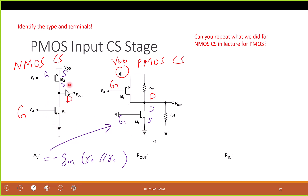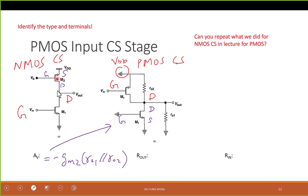Remember which GM do we use in the NMOS case? It is the transistor which gets the Vin. So what GM should we use here? It should be M2, because M2 is the one that gets the Vin. And then we also have R01 and R02 — but particularly, which one corresponds to the original Rd? Is it R01 or R02? It's R01, because Rd corresponds to the transistor without the Vin. So this one is the Rd.